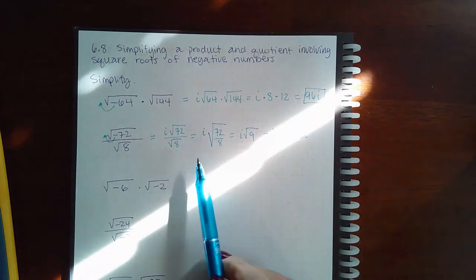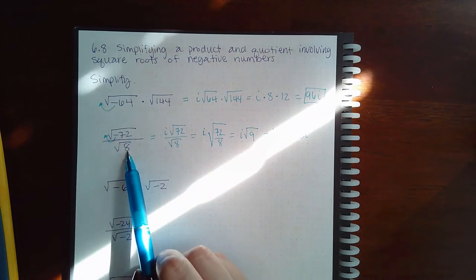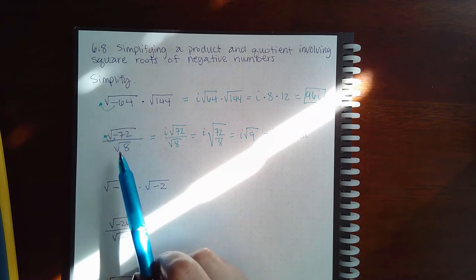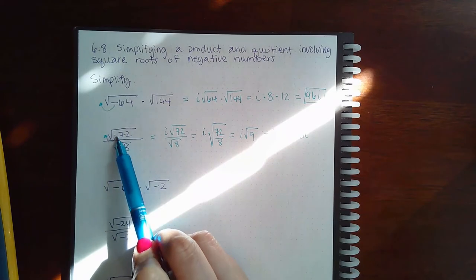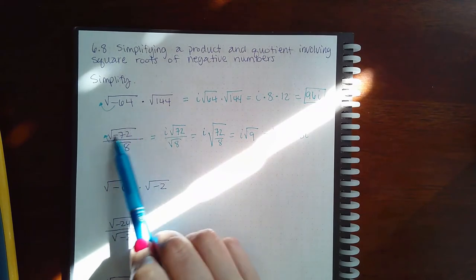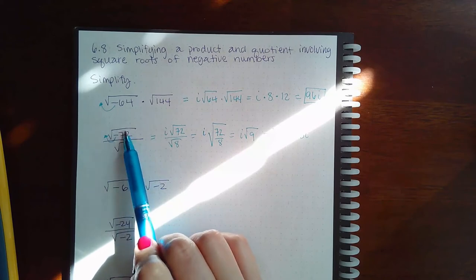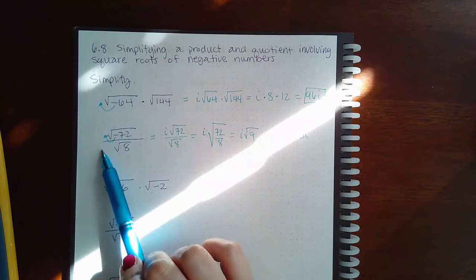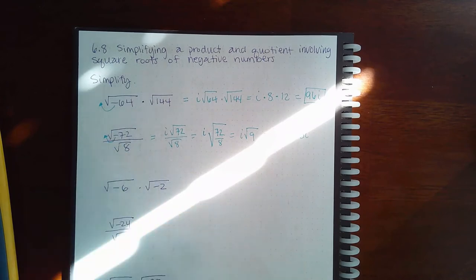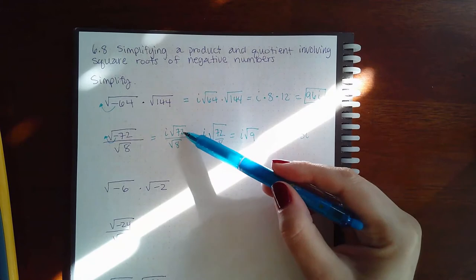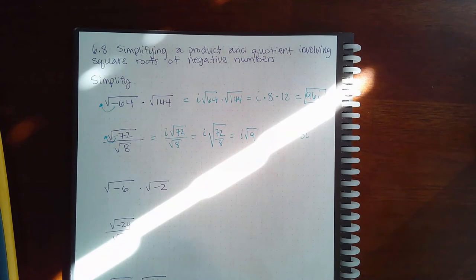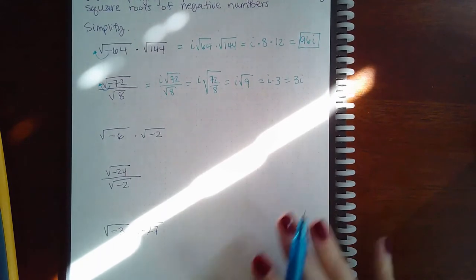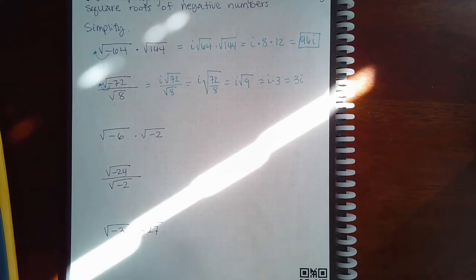Notice that I didn't combine the fraction first, because that rule only works if both the numerator and the denominator are real numbers. Since we're taking the square root of a negative, the result is not a real number. So you cannot make this one giant square root of a fraction until the i is completely out of the radical. Once the i is out and there's no negative inside the square root, then you can apply the rule that allows you to put the whole fraction under one square root.